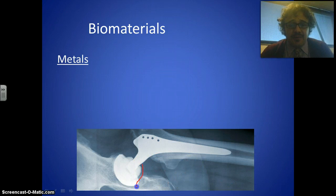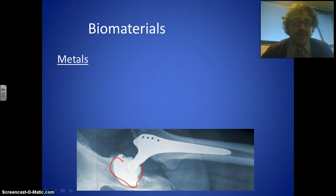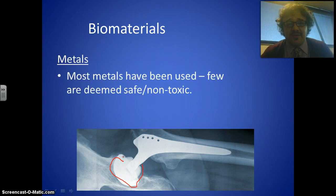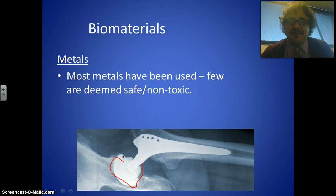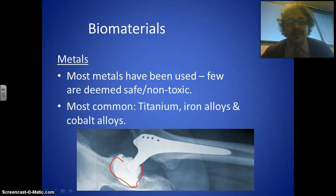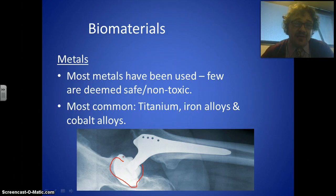Most readily available metals have been tried, but very few are actually safe or non-toxic. Lead was used for a long time and led to many people dying early from lead poisoning. The most common metals we use today are titanium, iron alloys — your steels — and cobalt alloys.